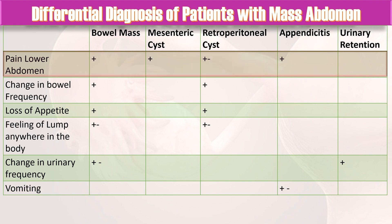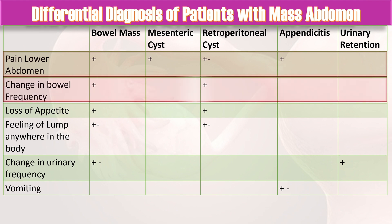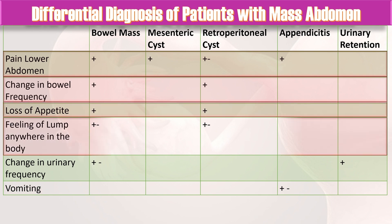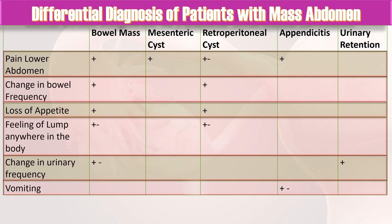History of fever is also present in case of tubo-ovarian mass, especially due to PID. Pain in the lower abdomen increases the possibility of bowel mass, mesenteric cysts, retroperitoneal cysts, or appendicitis if it is present in the right iliac fossa. Change in bowel frequency occurs in bowel mass or retroperitoneal cyst, and patients may also present with loss of appetite or feeling of a lump anywhere in the body. Change in urinary frequency occurs in urinary retention. Patients with appendicitis may also present with vomiting.